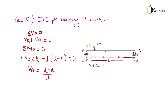For finding the support reactions, we use the equilibrium condition: summation of forces in the vertical direction equals zero. So Va plus Vb equals 1. Using the second equilibrium condition — moment about B equals zero — the equation becomes Va into L minus 1 into (L minus x), giving Va equals (L minus x) upon L.